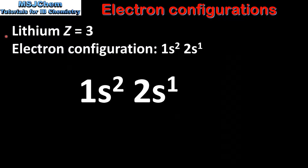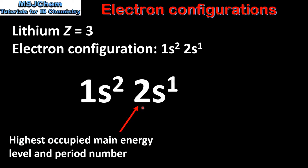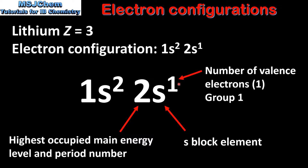Next we look at what we can determine from the electron configuration of an element regarding its position in the periodic table. Starting with lithium, atomic number 3, electron configuration 1s2 2s1: the 2 is the highest occupied main energy level and the period number, so lithium is in period 2. The 2s sublevel is being filled, so lithium is an S block element. The 1 is the number of valence electrons, so lithium is in group 1.